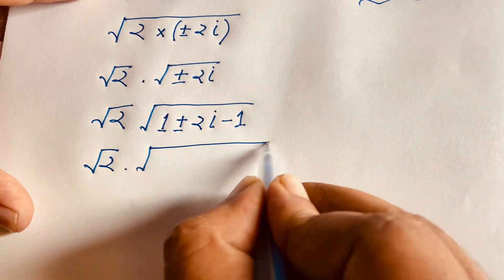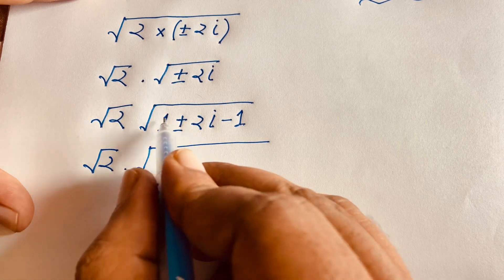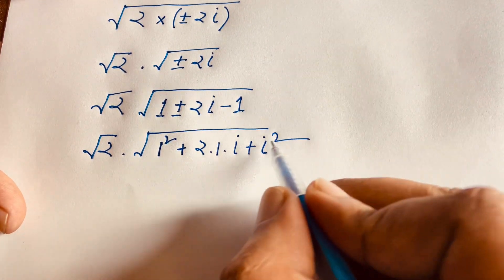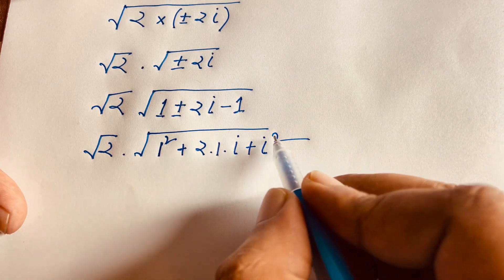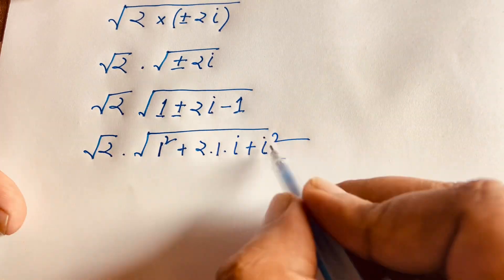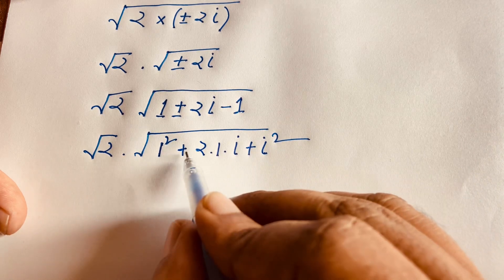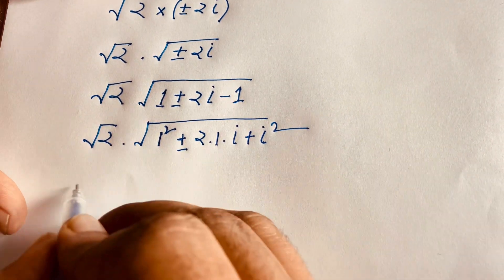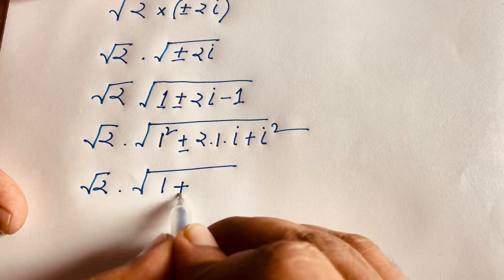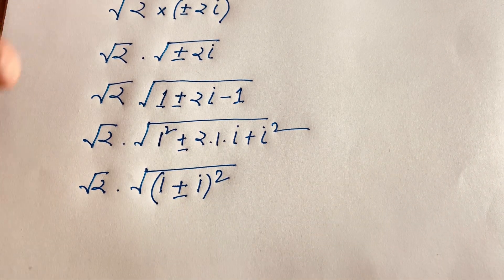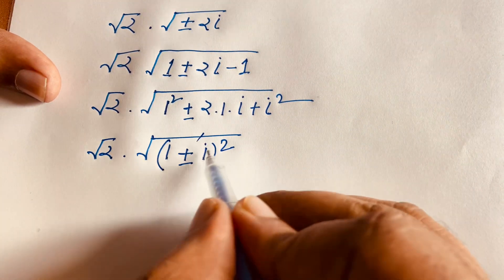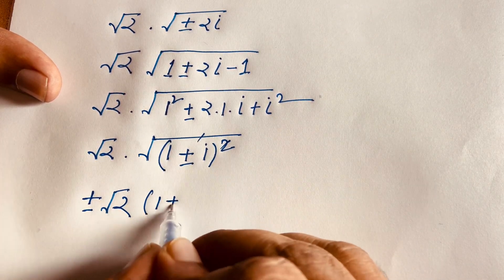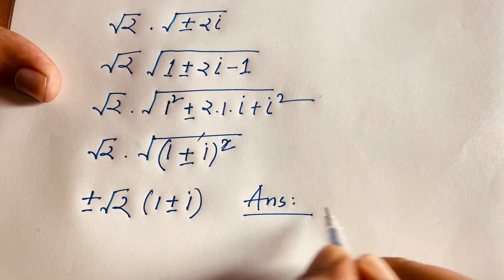I rewrite it as √2 × √(1² + 2×1×i + i²). Since i² = -1, and using the identity a² + 2ab + b² = (a+b)², this becomes √2 × √((1+i)²). The square root cancels the square, giving us the final answer: ±√2 × (1 ± i).